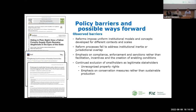First, reforms frequently imposed uniform institutional models or concepts developed for different contexts and scales. For example, management planning procedures relied on models and concepts designed to guide decision-making in the management of extensive stands of old-growth forests, rather than the management of pioneer species and second-growth fallows. Second, reform processes failed to address institutional inertia or jurisdictional overlap. In several cases, small cadres of reformers found that their well-intentioned initiatives had limited influence within large institutions' resistance to change. In the AMAPA case, mechanisms designed to take advantage of opportunities for state-level policy innovation still required approval of national-level agencies that stuck to existing approval processes, which blocked the introduction of reforms.